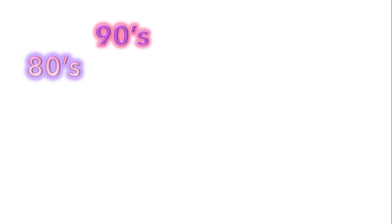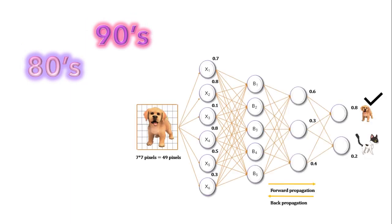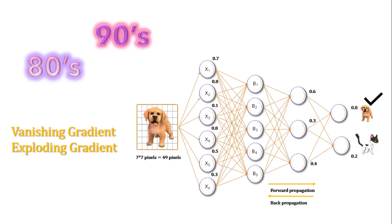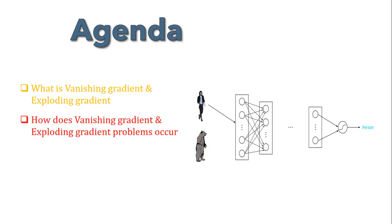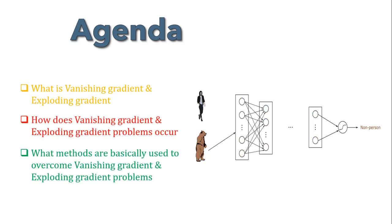If I go back to the 80s or 90s, at that time when researchers tried to train a deep neural network with a method called backpropagation, they ran into a fundamental problem called vanishing gradient, or sometimes the exploding gradient. Because we had to only use sigmoid function in each and every neuron, as the ReLU activation function was not discovered at that time. So let's try to understand what is vanishing gradient and exploding gradient, how does this problem occur, and what methods are used to overcome these problems.